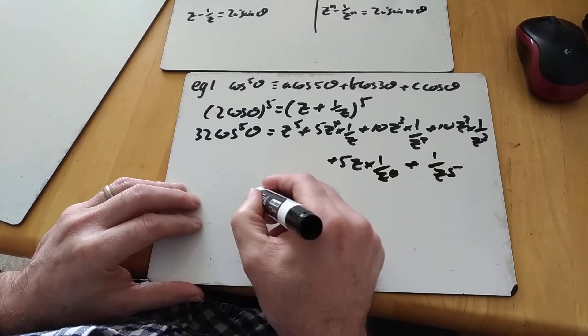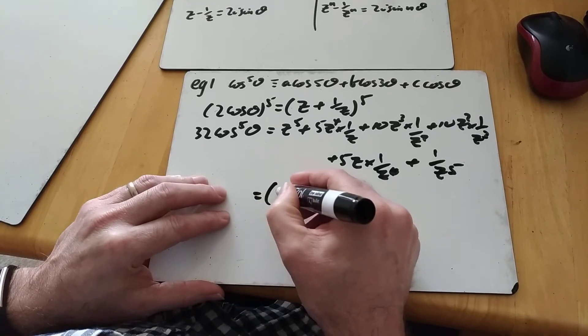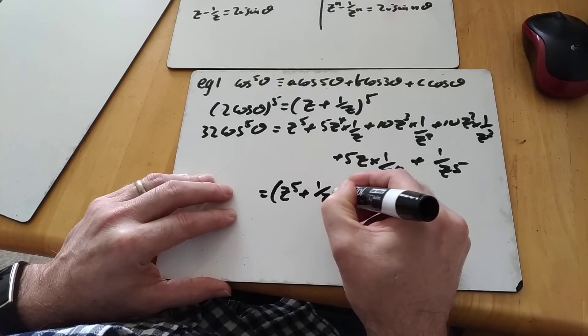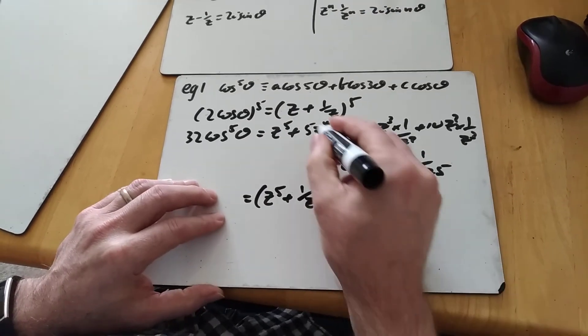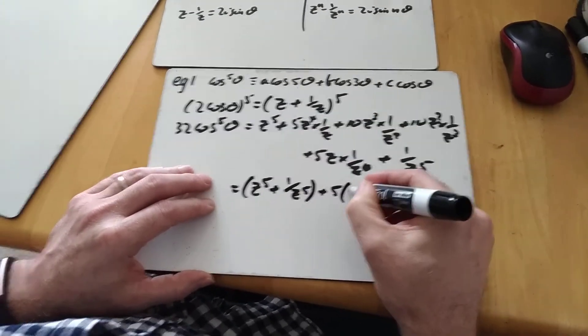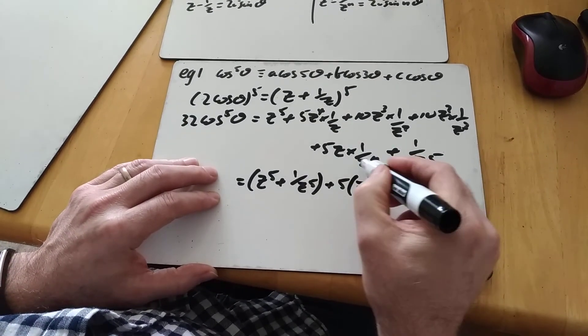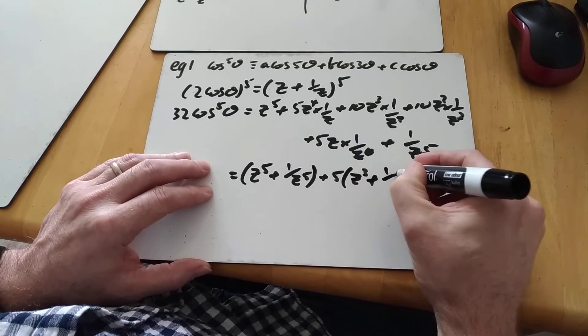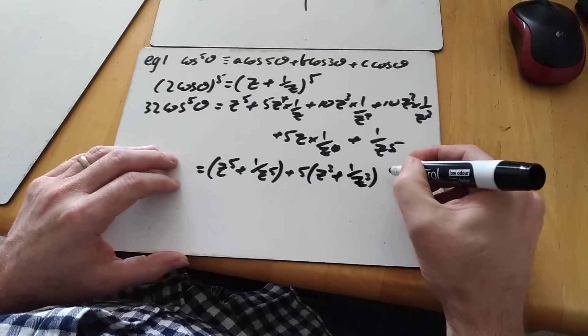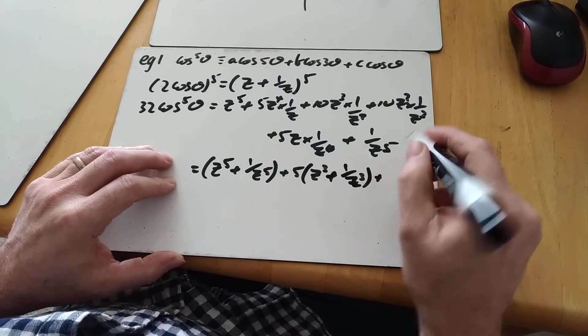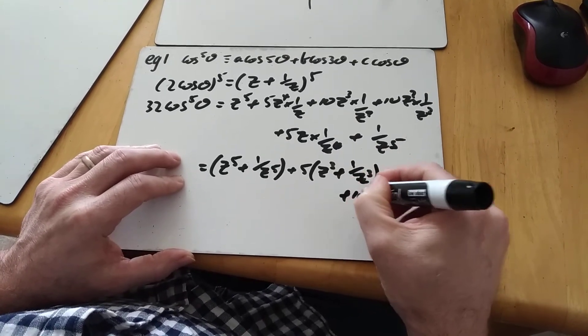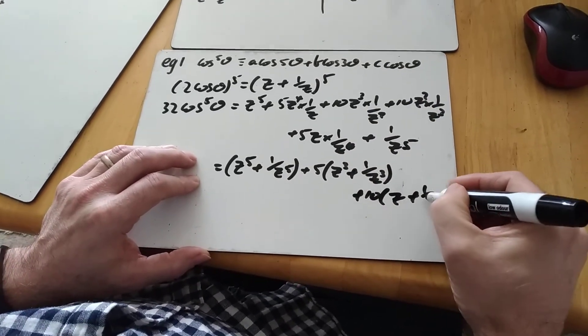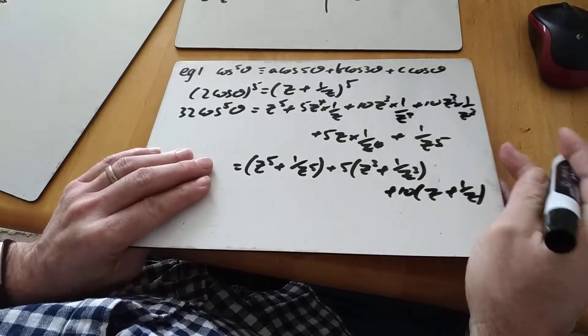And by the symmetry of everything, what you're going to get, you're going to get z to the 5 plus 1 over z to the 5. And then plus 5. z to the 4 times 1 over z is z cubed. And similarly, the term with the 5 coefficient, z over z to the 4 is 1 over z cubed. And then plus 10, z cubed over z squared is z plus 1 over z.